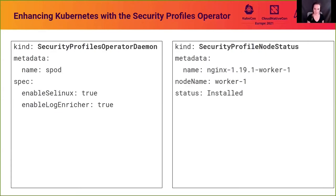We also have resources that help support cluster administrators running the operator. The Security Profiles Operator daemon resource is a configuration point for the controller that runs the daemon on nodes — it lets you toggle different configurations or set node tolerations for the daemon set. The security profile node status resource is a read-only node-level view of the status of installed profiles. Since profiles are cluster-level resources, this gives insight into the availability of a particular profile on any given node in your cluster.